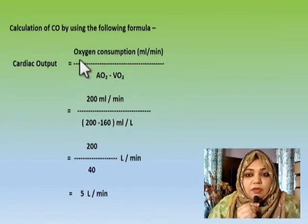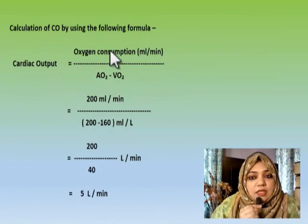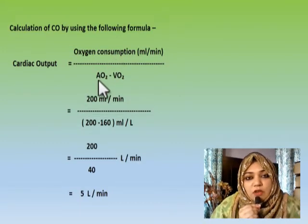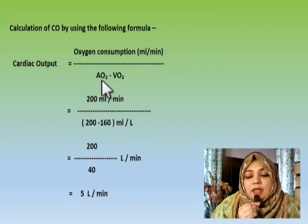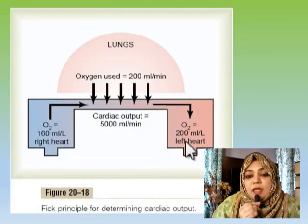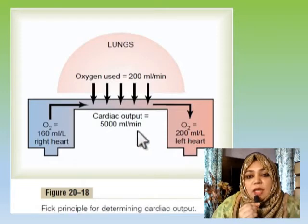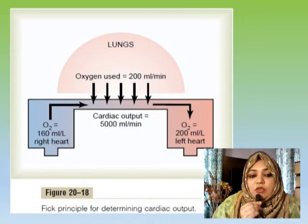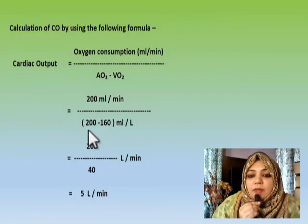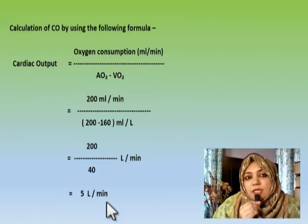Now let me show you the calculation using the Fick principle. Cardiac output equals oxygen consumption divided by arterial concentration of oxygen minus venous concentration of oxygen. Our oxygen consumption was 200 ml per minute. At the arterial end (left heart) the oxygen content is 200 ml per liter, and in the venous blood (right heart) the oxygen content is 160 ml per liter. So: 200 divided by (200 minus 160) = 200 divided by 40 = 5 liters per minute.